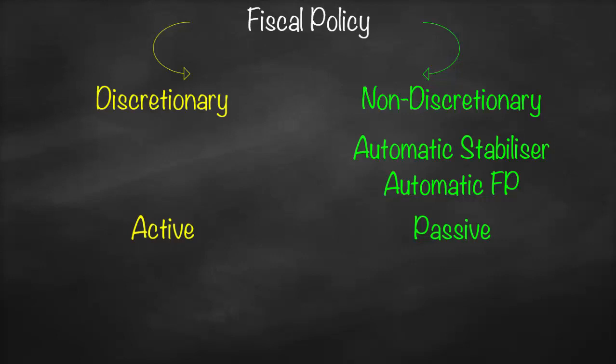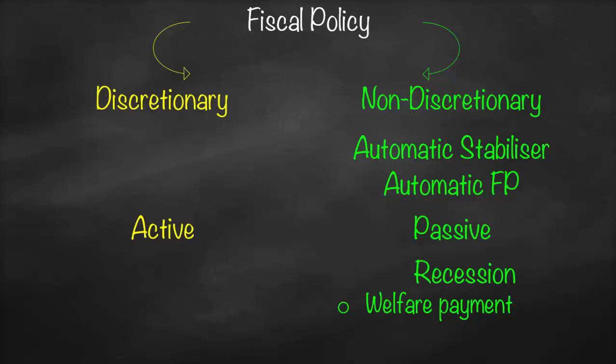An example of an automatic stabilizer: if we have a recession and any person loses their job, the government provides unemployment benefits — in Australia we call it a welfare payment. This person will go to Centrelink and they will be paid by the government just to survive. So at any time a person loses their job, the government will pay them.